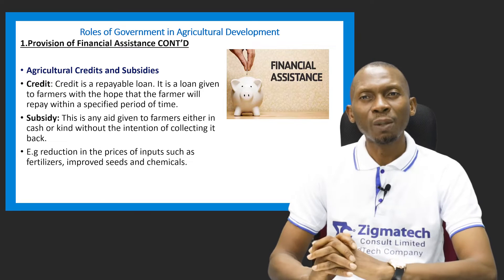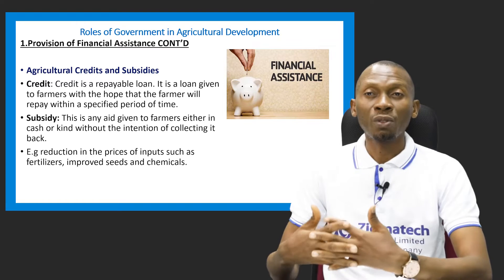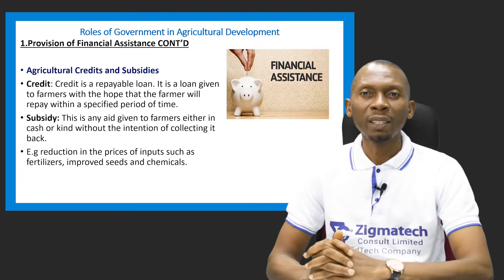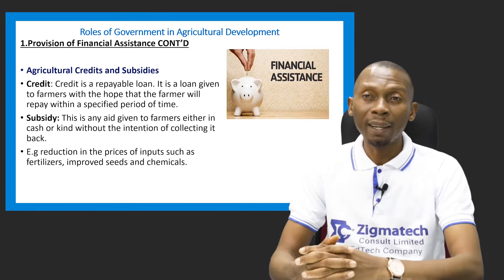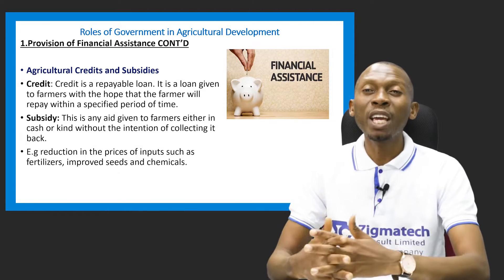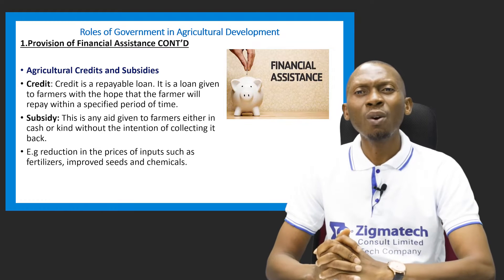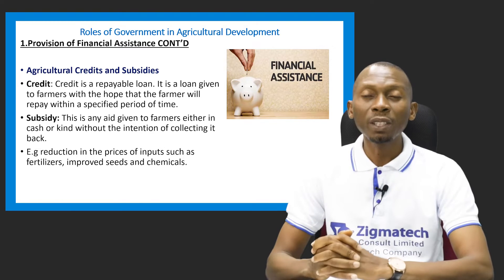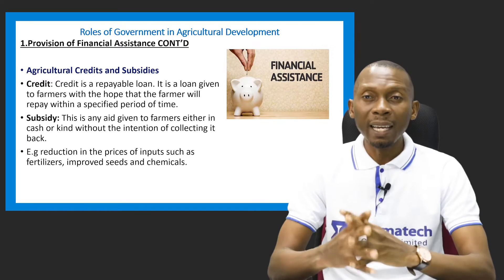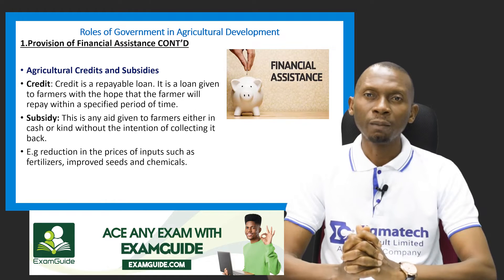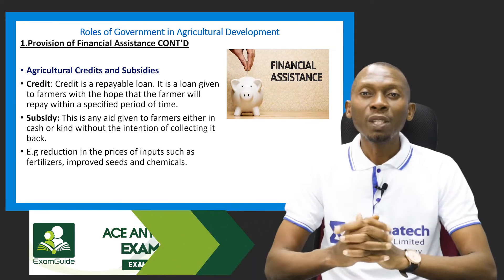Let's look at the meaning of agricultural subsidies and credits. The government provides financial assistance to farmers in the form of loans, credits and subsidies. A credit is a repayable loan — money given to somebody that will be paid back — given to the farmer with the hope that the farmer will pay back within a specified period of time. A subsidy is an aid given to the farmers, either in cash or kind, without the intention of collecting it back. Credit will be paid back, but the subsidy will not be paid back.